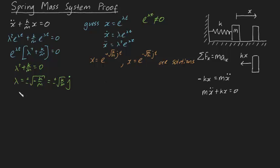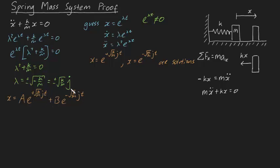So we've found two possible solutions to this differential equation. But what is the generalized solution? Well, it turns out we can apply the superposition theorem. The generalized solution is going to be some constant a times e to the plus square root of k over m jt, plus another constant b times e to the minus square root of k over m jt. Notice that this equation must also satisfy the differential equation. It's also worth noting that the constants a and b can be in the complex domain, and we're going to use this fact later in our derivation.